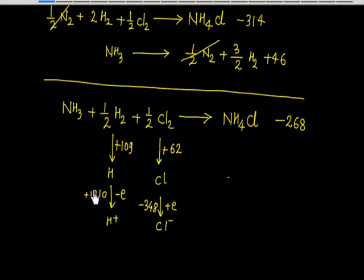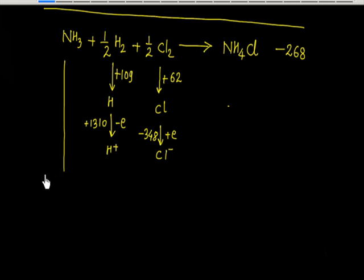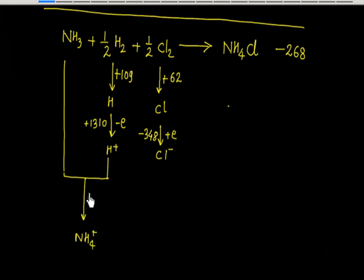Now NH3 is present, and H⁺ is available. NH3 combines with H⁺ to form NH4⁺. The energy involved in this process — whatever it may be — let us call it the proton affinity energy, PA.